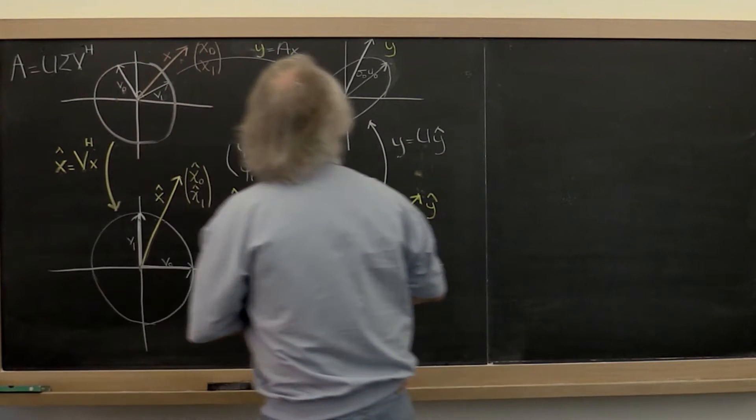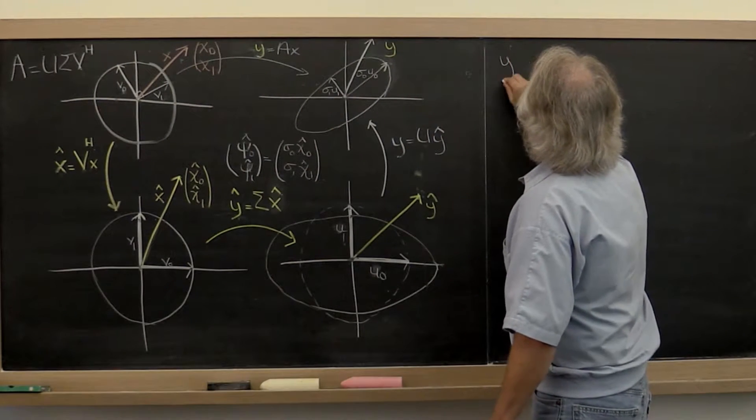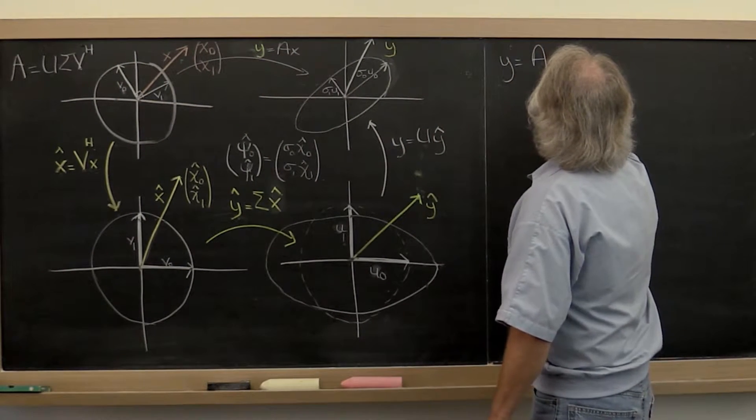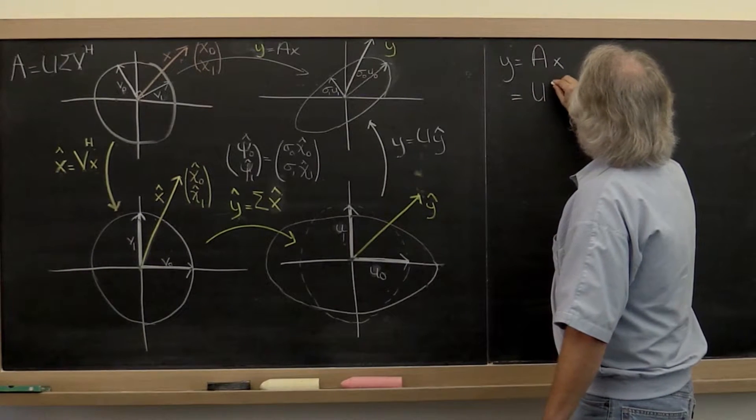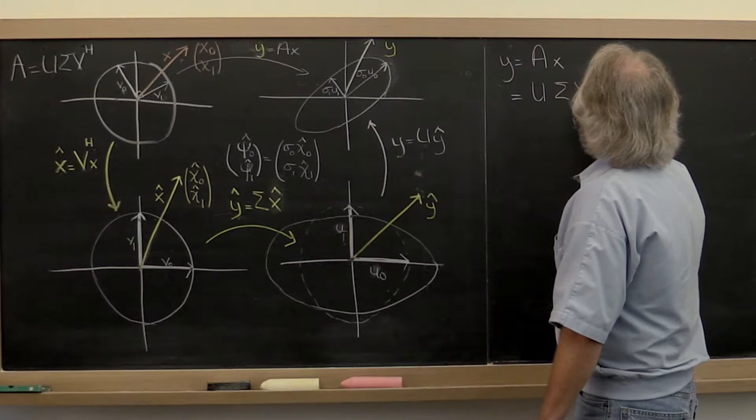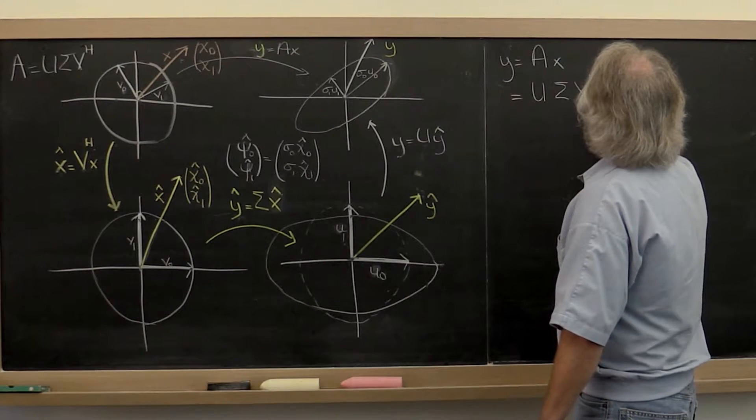Well, if we look at y equals A times x, that now becomes U times sigma times V Hermitian transpose times x.